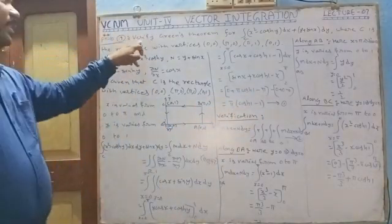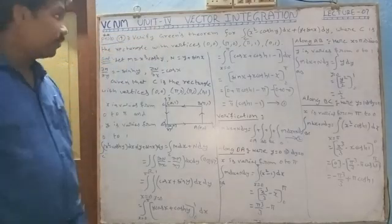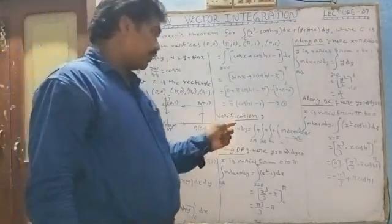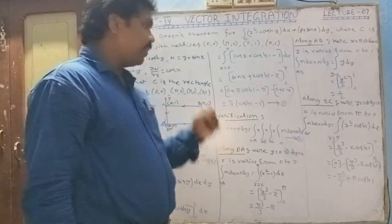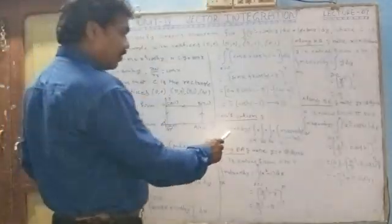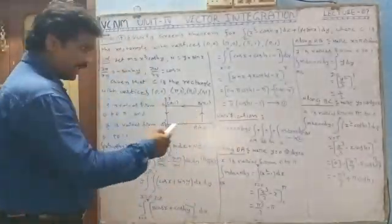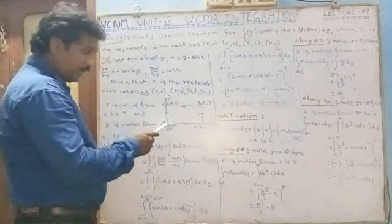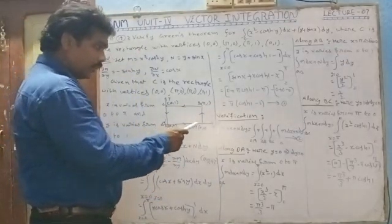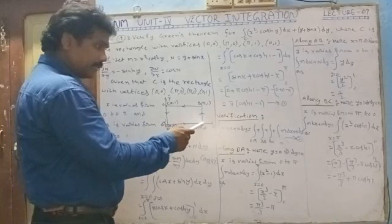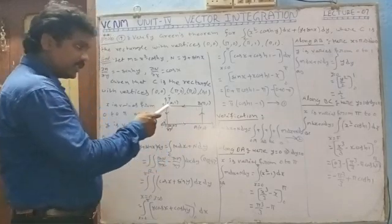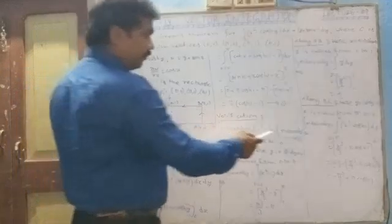Now we verify Green's theorem. The integral over C of M dx plus N dy equals the integral starting from O, along OA, plus along AB, plus along BC, plus along CO.